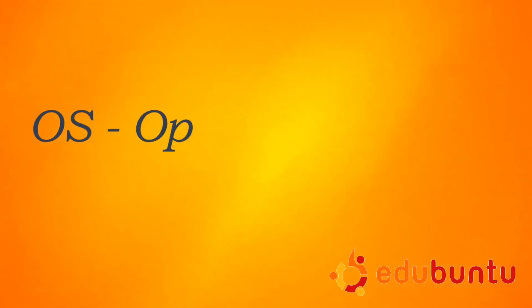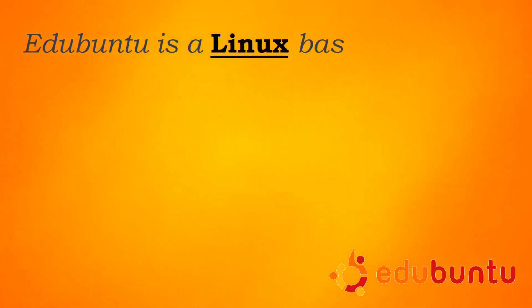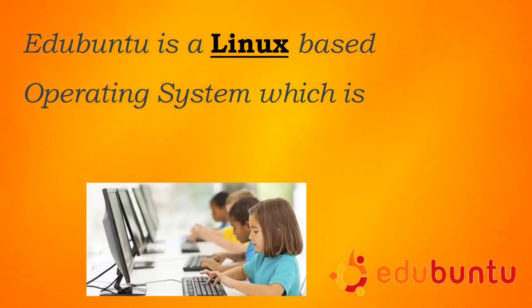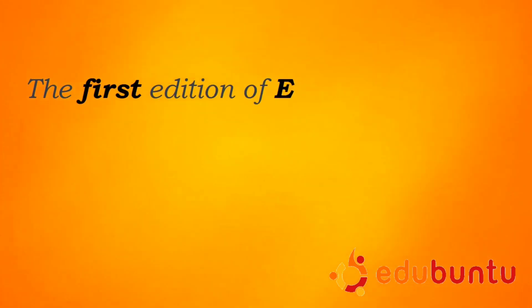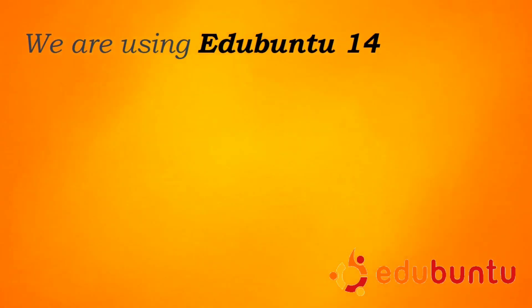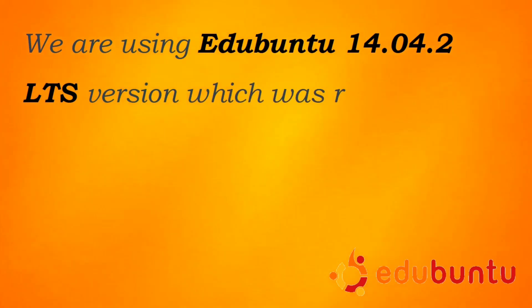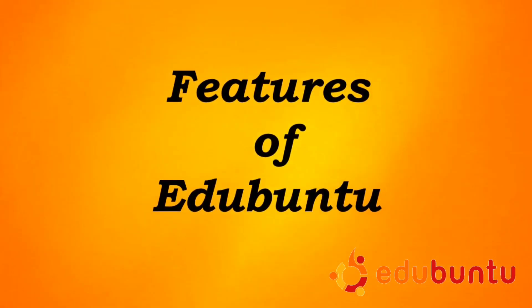Let's start with OS. OS stands for Operating System. E2buntu is a Linux based operating system which is designed for use in the field of education. The first edition of e2buntu 5.10 was released on 13th October 2005, and we are using e2buntu 14.04.2 LTS version which was released on February 20, 2015.